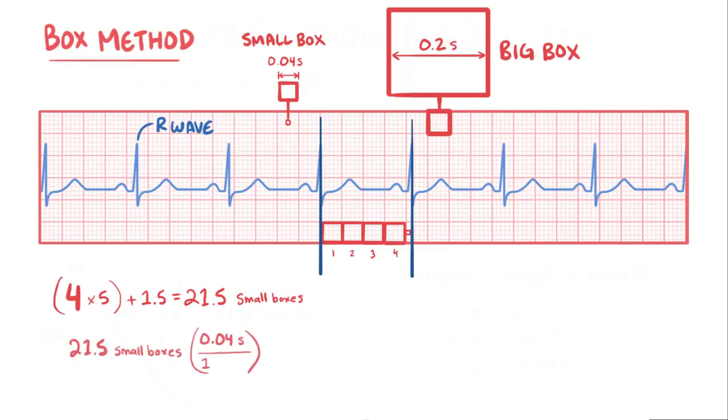And that means that there are 0.04 seconds times 21.5 or 0.86 seconds between heartbeats, so the units here are seconds per heartbeat.